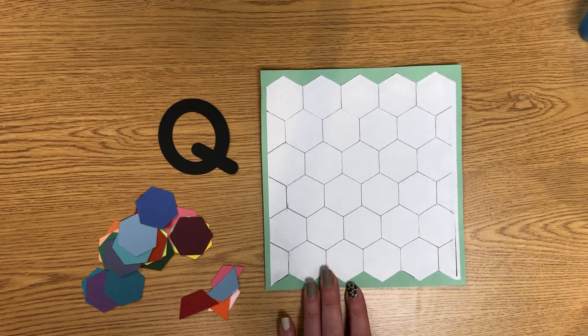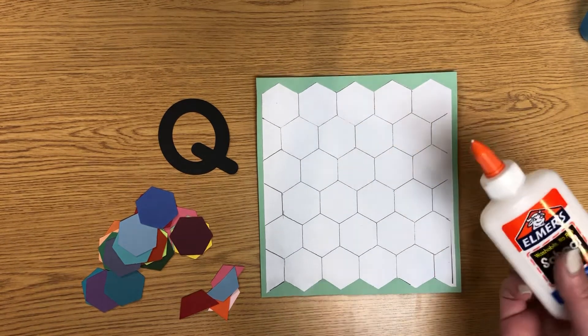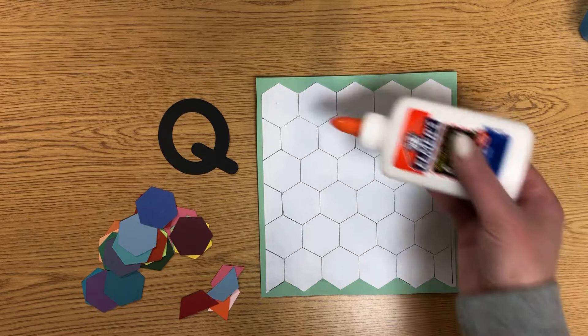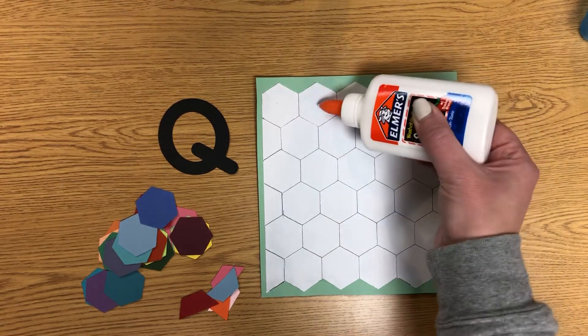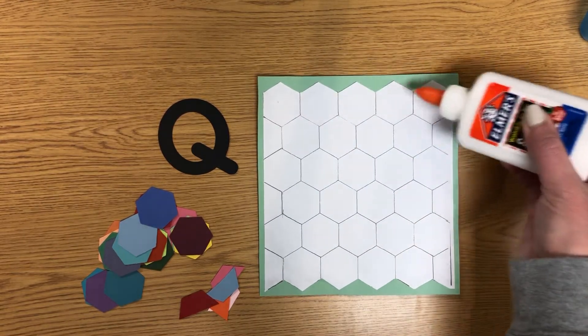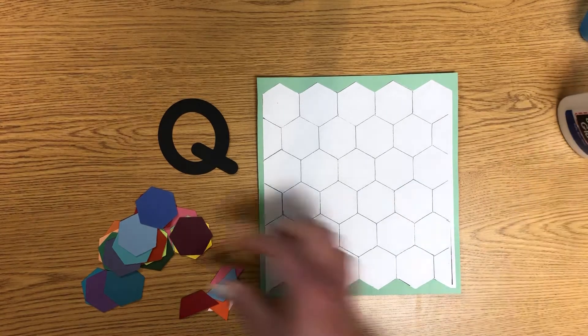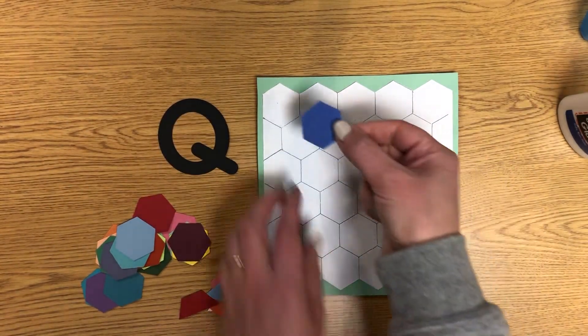On here you have the template where you're just going to take your squeezy glue, and you could probably do a row at a time. Put a dot of glue in the middle of each hexagon, then pick up one of your hexagons.